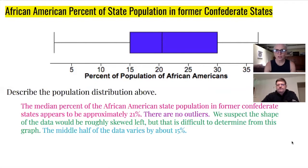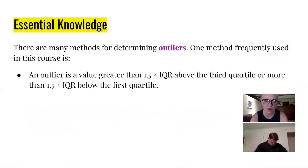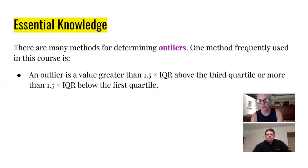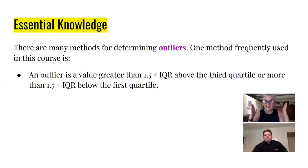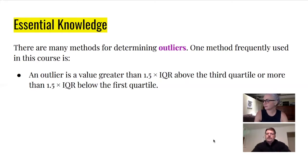You might wonder how we know there are no outliers without standard deviation. Standard deviation goes with mean, and we've switched to medians. For medians we use the one and a half rule: an outlier is a value greater than 1.5 times the IQR above Q3 or below Q1. This makes sense — for means we used two times the standard deviation from the center; now the box itself takes up space, so 1.5 is the compromise for medians.